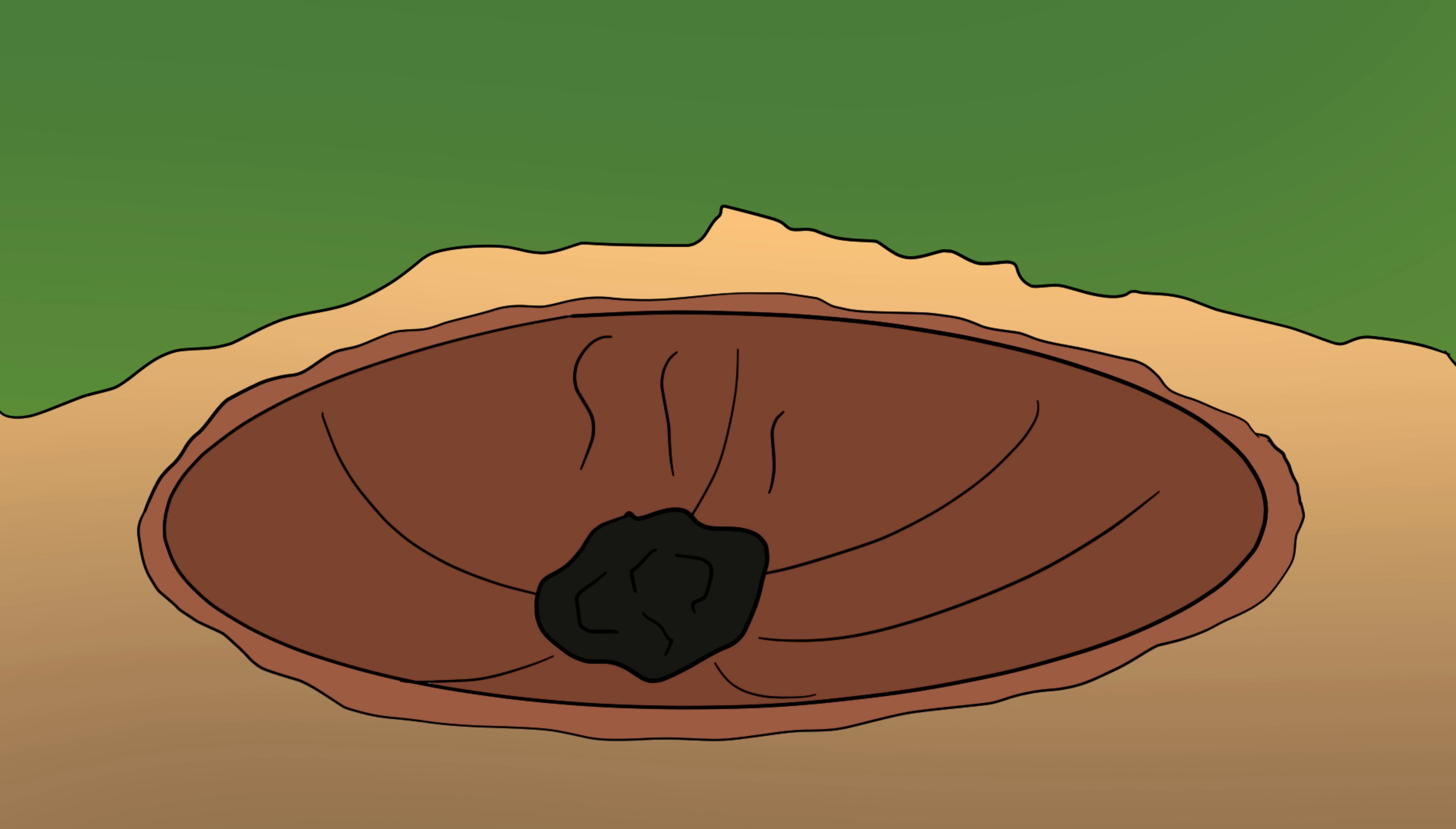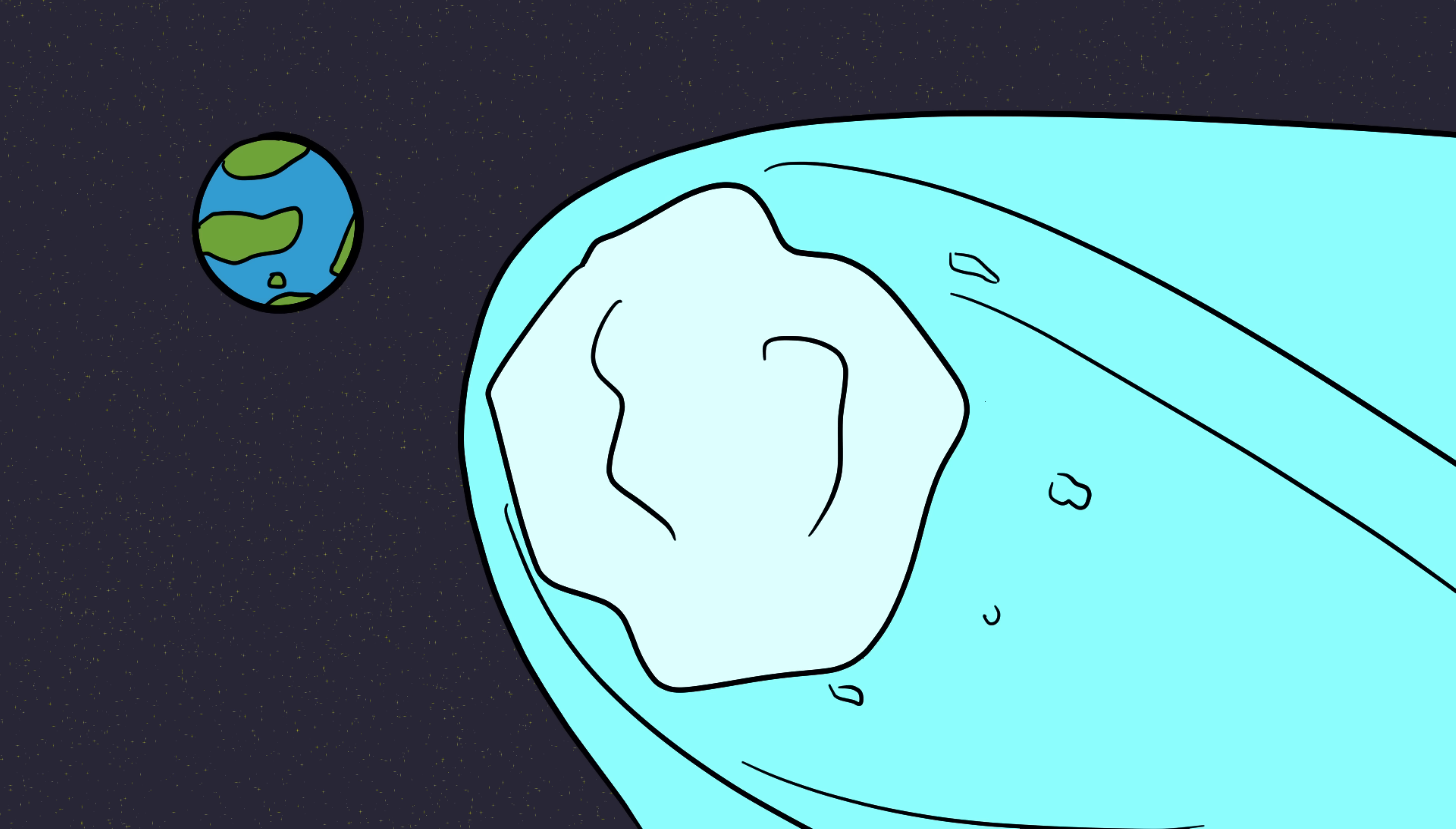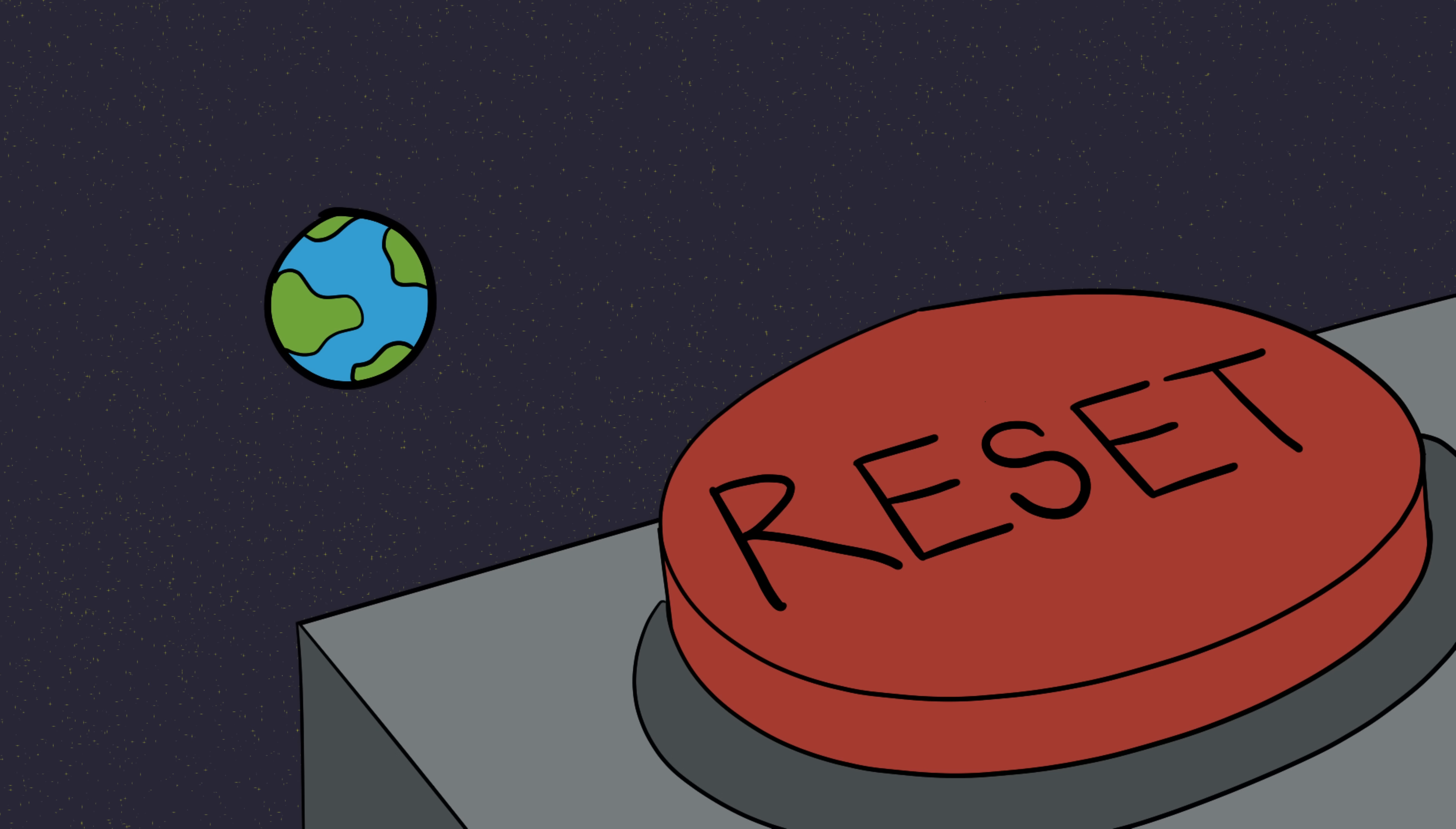And comets, even scarier. They move faster, come from deeper space, and we usually get even less warning. Imagine a giant icy bullet hurtling toward Earth at 70,000 kilometers per hour, and we don't even know it's coming until it lights up the sky. So yeah, dinosaurs had bad luck. But the universe doesn't play favorites. Our reset button is still out there, circling patiently.